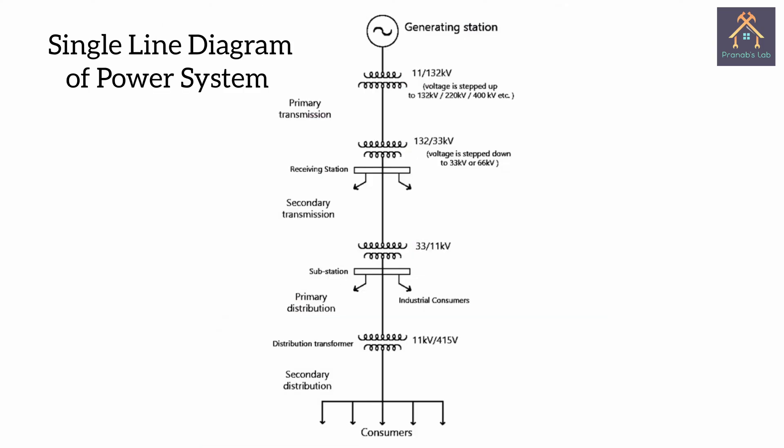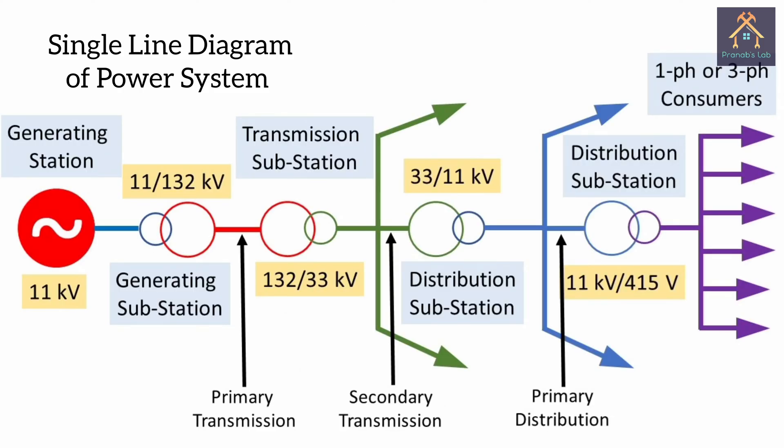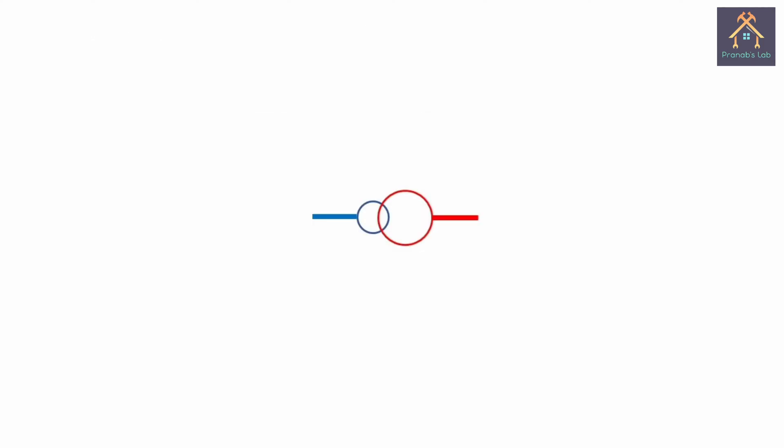We can easily understand the journey of electricity using this flowchart. This is called single line diagram. Before explaining the diagram, let's understand the basic symbol used in this single line diagram.